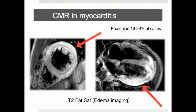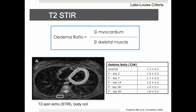Increased T2 signal on T2 weighted imaging is less common and usually representative of an acute or ongoing active inflammation. Because of the more uniform spread of gray values in T2 weighted images, detecting an increase in T2 signal can be occasionally quite challenging. Hence the role for a supportive quantitative measure, the edema ratio, which relates the signal intensity of myocardium to that of skeletal muscle.